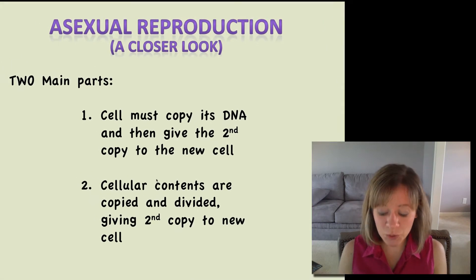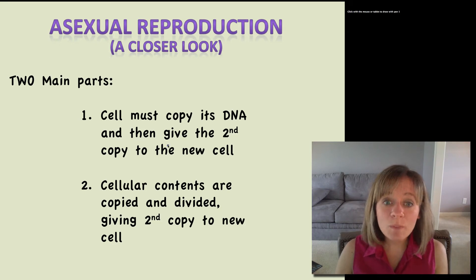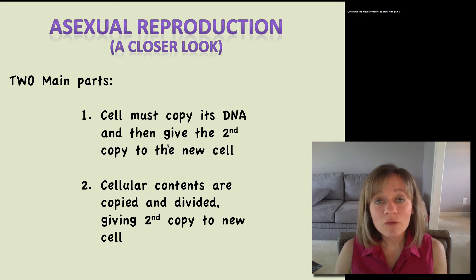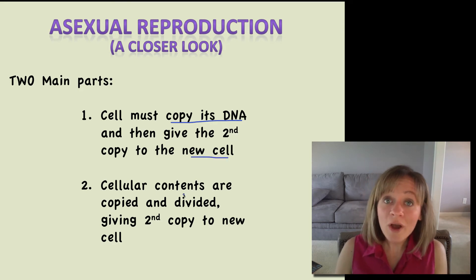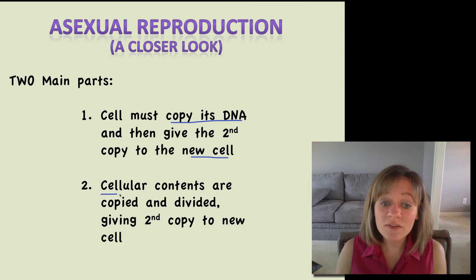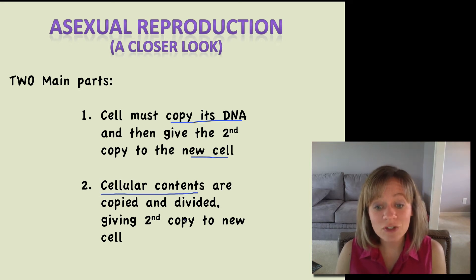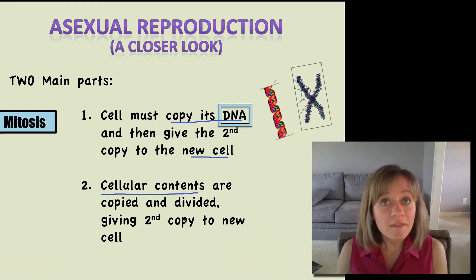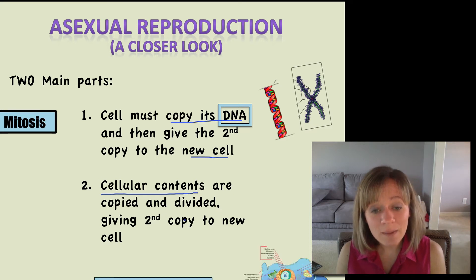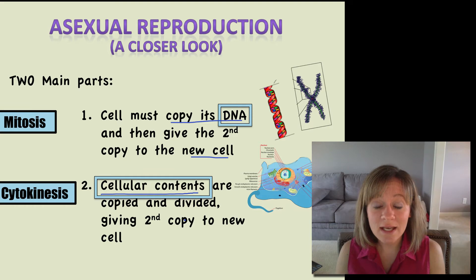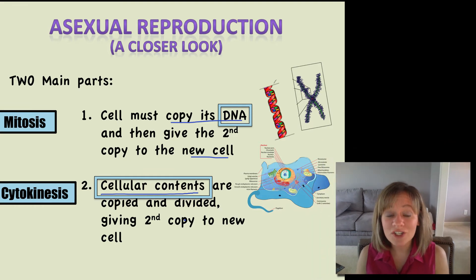Let's take a closer look at asexual reproduction. It has two main parts. If we're going to make an entirely new identical cell, we first have to copy all the DNA — all that genetic information — so we can give the second copy to the new cell. We also have to copy all of the cellular contents, the cytoplasm and the organelles. The first part, copying and dividing the DNA, is called mitosis. The second part, copying and dividing the cell contents and cytoplasm, is called cytokinesis.